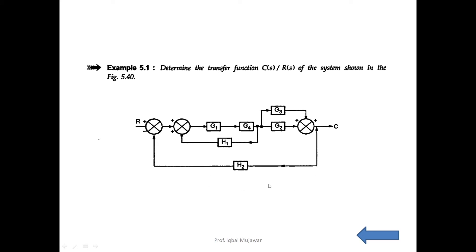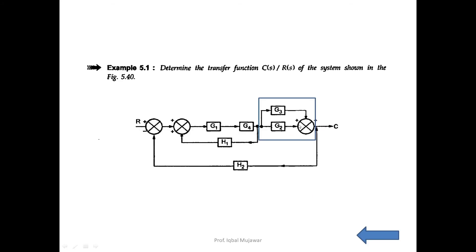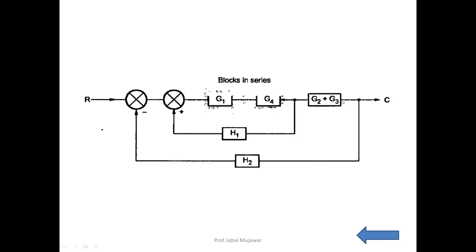Let's start with the first problem. If you see this problem carefully, we can see a parallel system here — two blocks are in parallel, connected at a summing point. As per rule number three, if blocks are parallel, we need to add them and convert to a single block as per their sign: positive or negative. G3 is positive, G2 is positive, and G1 is negative. Here both are positive, so we combine these three blocks into one rectangle writing G2 plus G3.